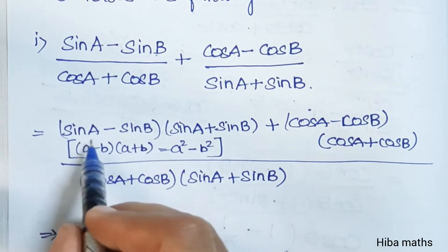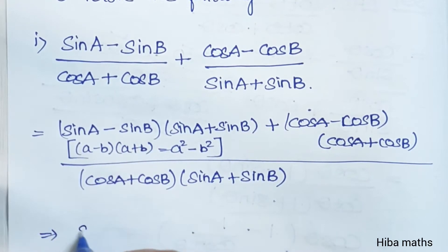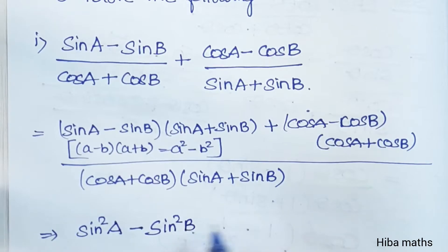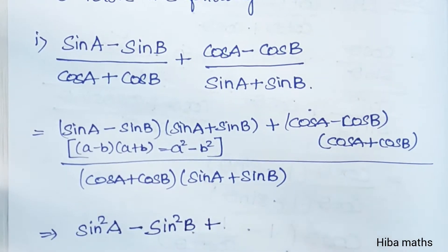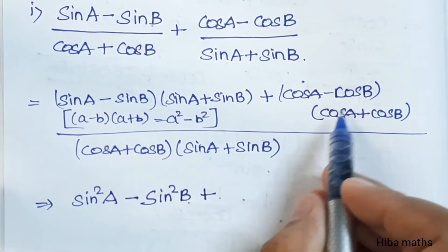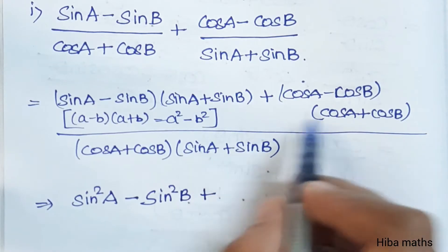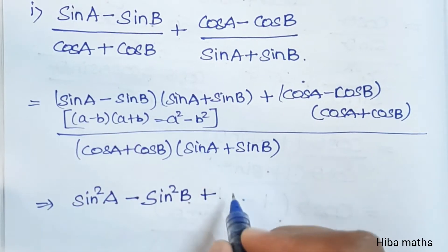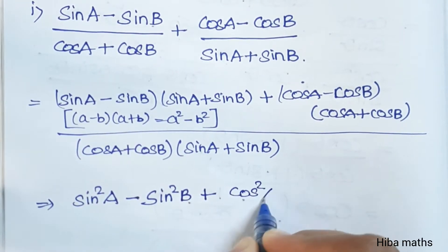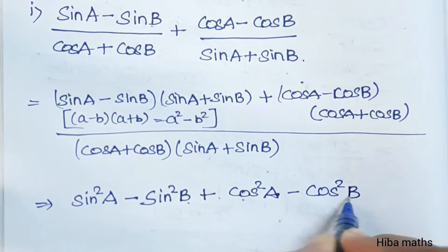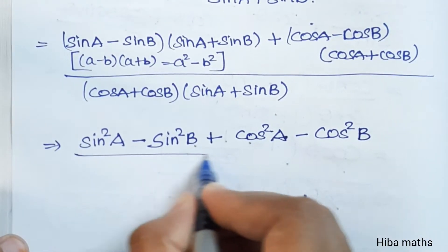sinA is a and sinB is b, so we get sin squared A minus sin squared B. Similarly, cosA minus cosB times cosA plus cosB equals cos squared A minus cos squared B, using the same identity (a minus b)(a plus b) = a squared minus b squared.